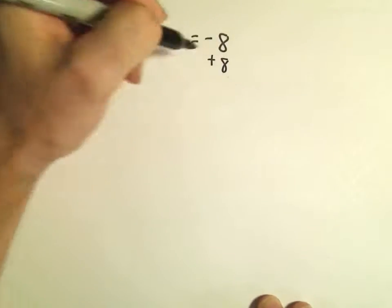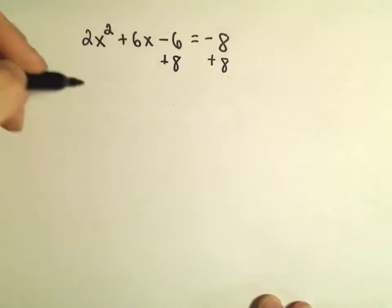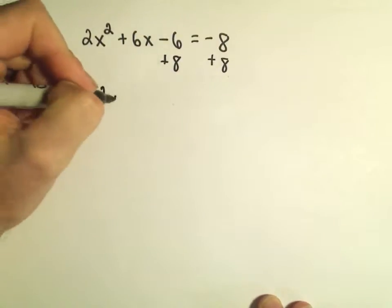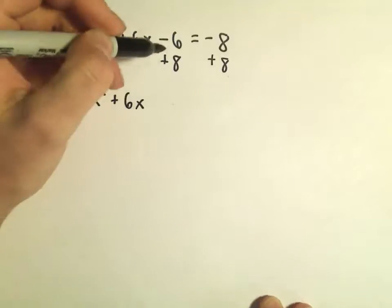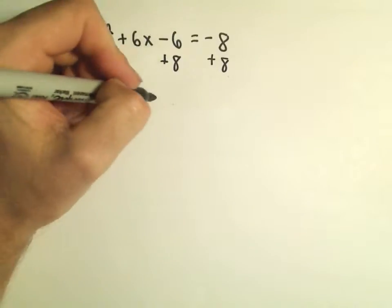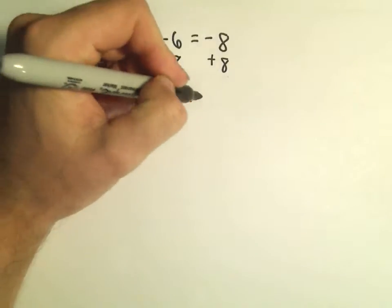So, the first thing I'm going to have to do in this case is simply add 8 to both sides. So, then we're going to have 2x squared plus 6x. Negative 6 plus 8 is going to give us positive 2 equals 0.